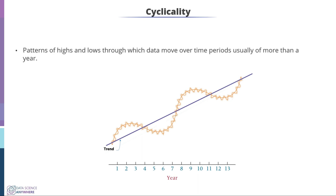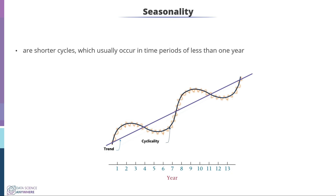The second component is cyclicality. Cyclicality is behavior in the data where you observe a pattern repeating over a period. Usually cyclicality spans more than a year. As you can see from the data, particularly in the long term, the pattern is repeating every eight years. Hence this period is called cyclicality.